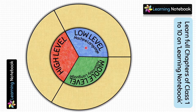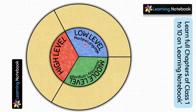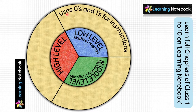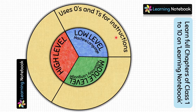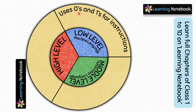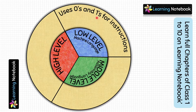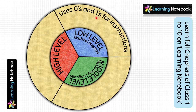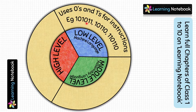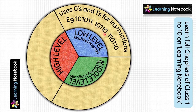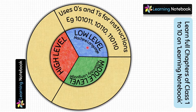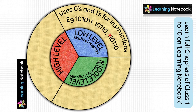First, we will write about low level language, also known as machine language. Low level language uses zeros and ones for instructions — all instructions are written with 0 and 1 only. These digits are called binary digits: 0 means off and 1 means on, so the computer only understands on and off. Instructions look like: 10101110 or 10110.